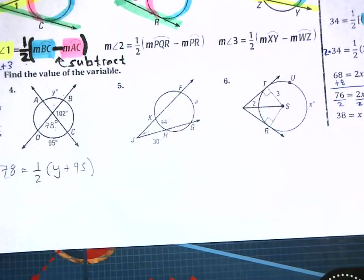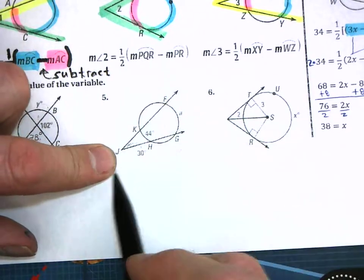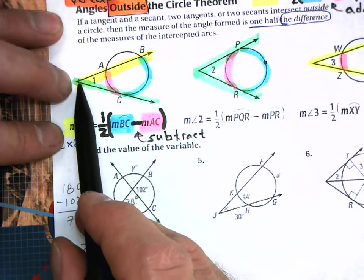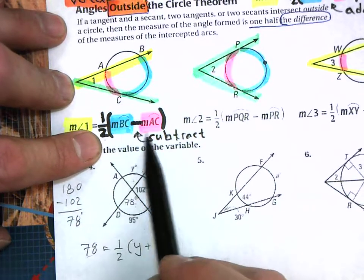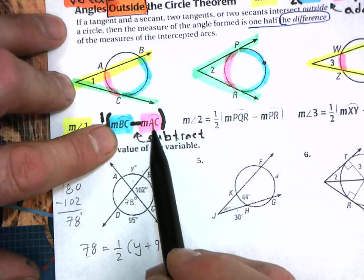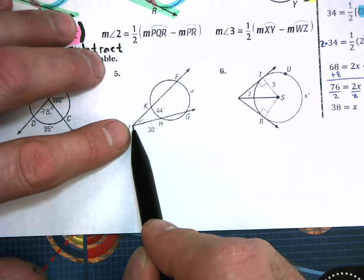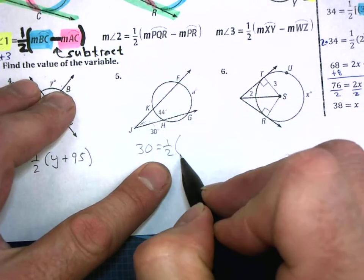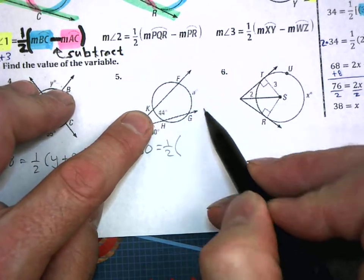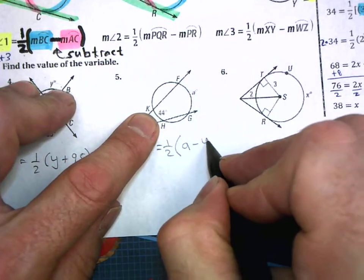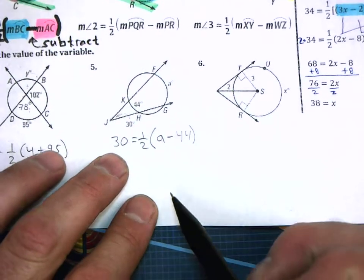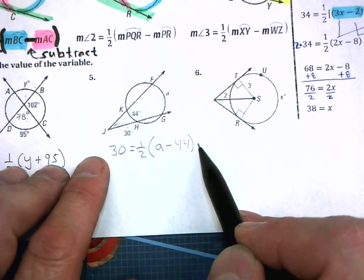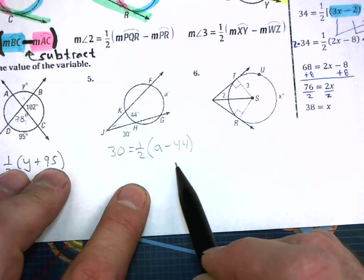For this one, the same general concept applies, except the vertex is outside of the circle, so we use: the measure of the angle outside equals one half the difference of the two intercepted arcs. The angle outside is 30, so: 30 equals one half times (a minus 44). Multiply both sides by 2 to clear the denominator, then add 44 to both sides to solve for a.